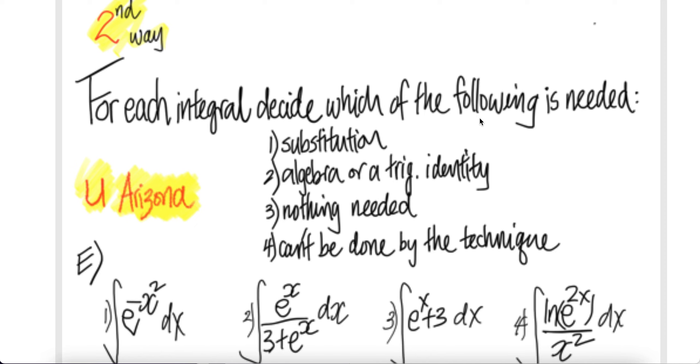For each integral, decide which of the following is needed: substitution, algebra or a trig identity, nothing is needed, or can't be done by the techniques.